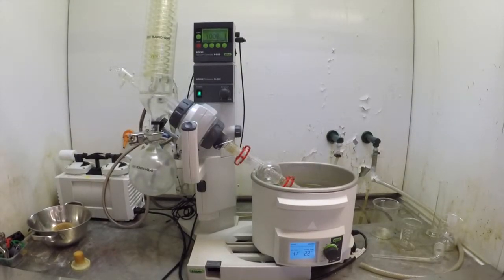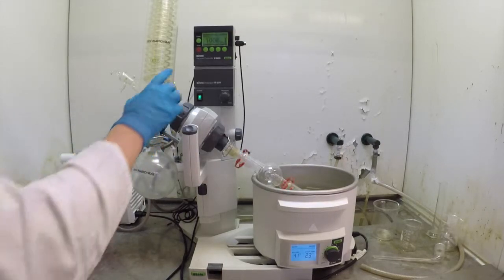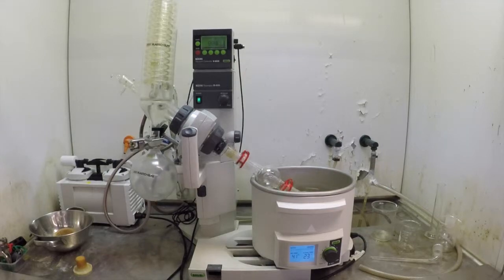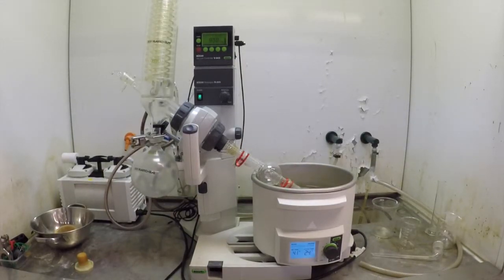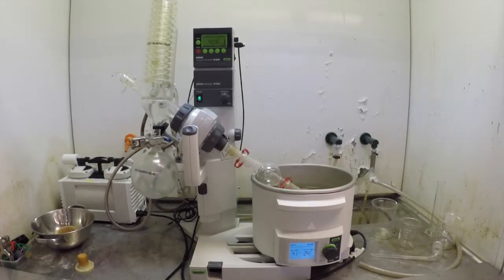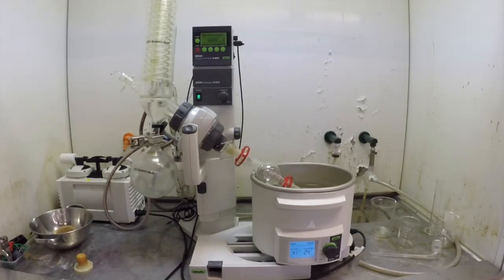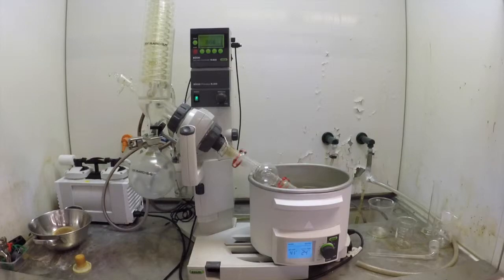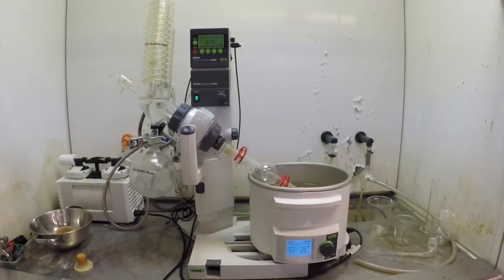This rotavapor has two settings for evaporating solvents: manual and continuous. In manual mode, a pre-selected pressure is chosen and logged into the rotavapor, and it will attempt to achieve that pressure rapidly. This increases likelihood of bumping both the solvent and product into the trap and the rotavapor, negatively impacting yield and potentially contaminating the system.